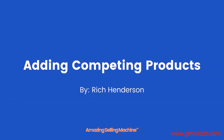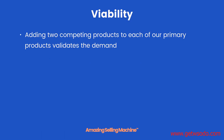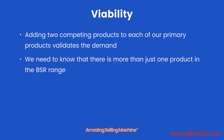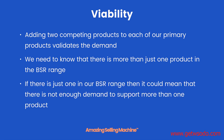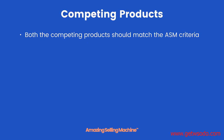In this lesson you're going to learn how to add competing products to your primary product list. These competing products prove the viability of your primary products. Adding two competing products to each of our primary products validates the demand — we need to know that there is more than just one product in the BSR range. If there is just one in our BSR range, it could mean there is not enough demand to support more than one product. Both competing products should match the ASM criteria.